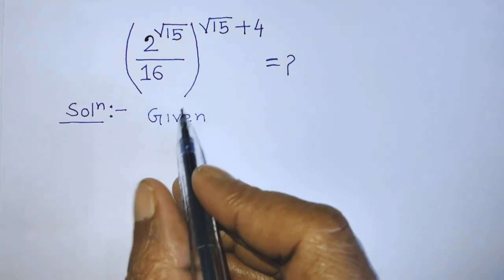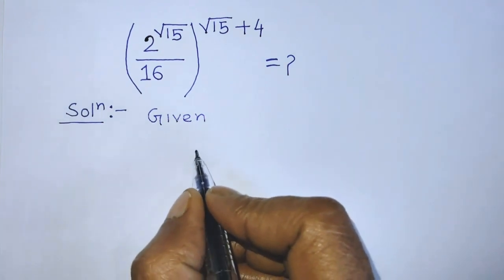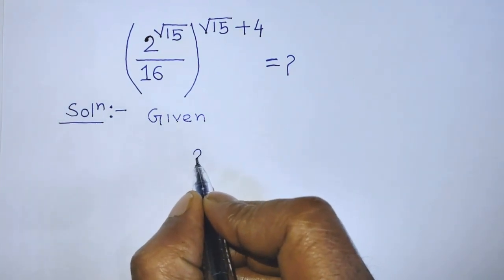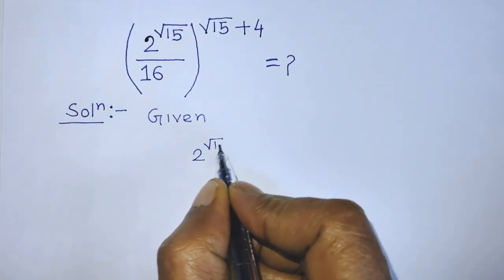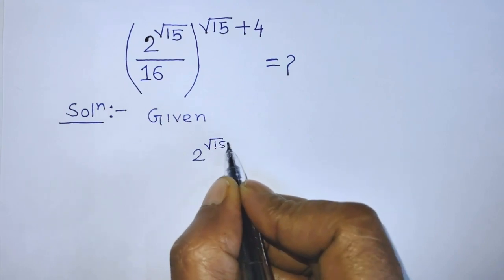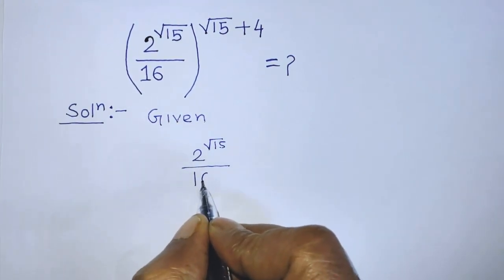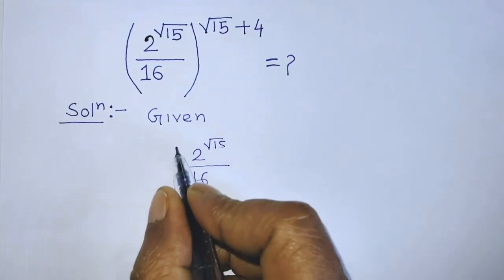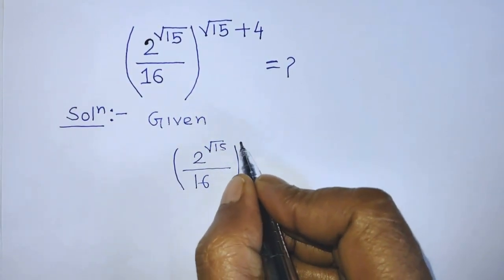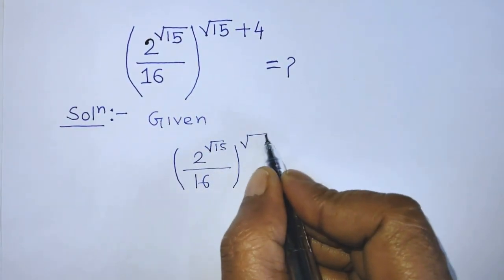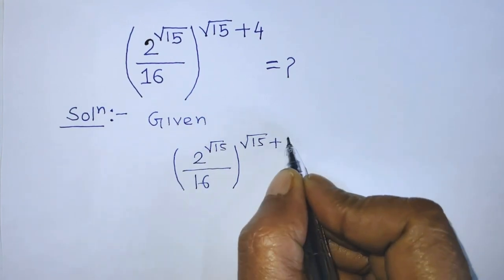Our given algebraic expression is 2 to the power the square root of 15 over 16, whole to the power the square root of 15 plus 4.